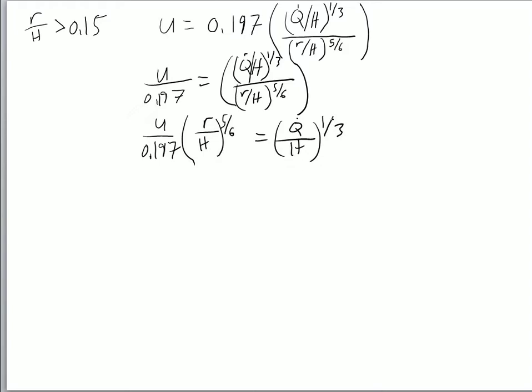And then we'll reverse the power. We're going to take this power, flip it, and take it to the other side. So we'll have u divided by 0.197, multiplied by r over h to the five-sixths power, and this whole quantity raised to the three over one power.